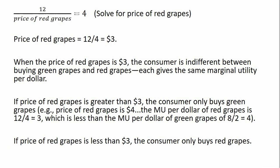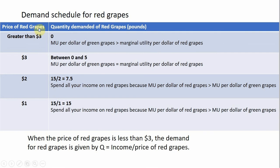Let's sum this up in a demand schedule for red grapes. If the price of red grapes is greater than $3, the quantity demanded is zero — you get more bang for the buck from green grapes. If the price of red grapes is $3, the consumer is indifferent and could buy zero red grapes, or could spend all $15 on red grapes. At $3 per pound, $15 divided by 3 gives 5 pounds of red grapes.